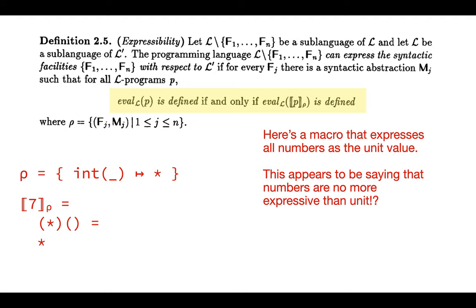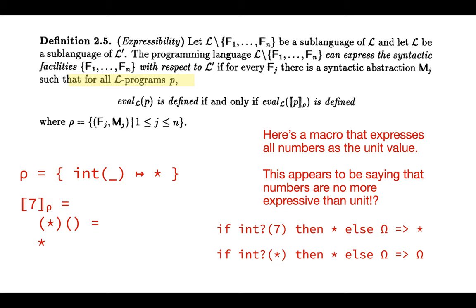The trick is that the definition is for all L programs P — not just integer literals, but programs like: 'if integer huh blah then star else omega', where omega is the infinite-looping program. The original program terminates, but the macro-expanded version — where every integer becomes unit — has different termination behavior. So this macro does not satisfy the definition of expressibility. The language with integers cannot express the language without integers this way.